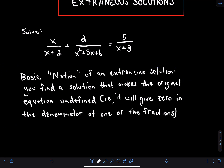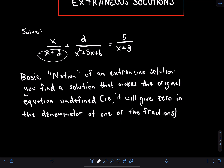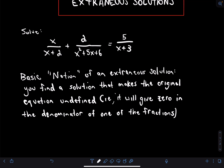When we talk about extraneous solutions, you're going to solve this rational equation and find a solution that makes the original equation undefined. When you substitute that solution in, it's going to produce a zero in the denominator of a fraction somewhere, and recall that dividing by zero is undefined. So first let's solve this equation and then we'll see what happens.